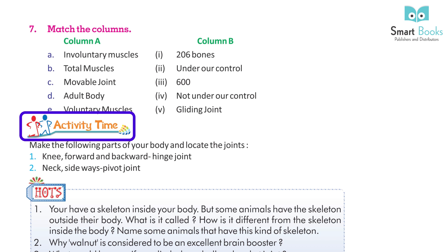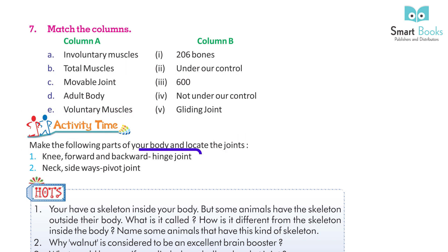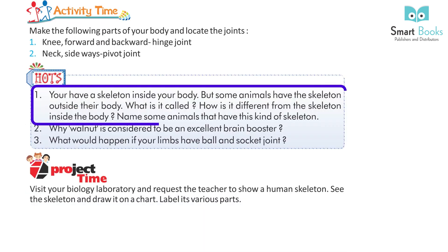Activity time: make the following movements with parts of your body and locate the joints. 1. Knee forward and backward — hinge joint. 2. Neck sideways — pivot joint. Hots: You have a skeleton inside your body, but some animals have the skeleton outside their body. What is it called? How is it different from the skeleton inside the body? Name some animals that have this kind of skeleton.